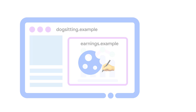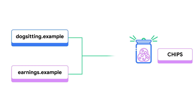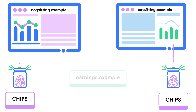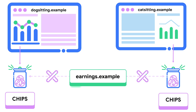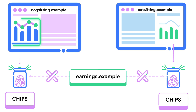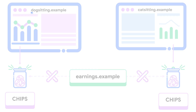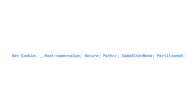Remember our Earnings Dashboard example. In this example, the settings cookie only needs to be accessed within the specific combination of DogSitting.example plus Earnings.example. User settings data doesn't need to be shared within the top-level context of Earnings.example, and the Earnings.example widget embedded on CatSitting.example doesn't need to know which user settings are saved for the widget embedded on DogSitting.example. For data that stays within the widget and the embedding site, add the partitioned attribute to your cookies and keep them isolated. Partitioned cookies, known as CHIPS, allow you to opt a cookie into partitioned storage with a separate cookie jar per top-level site.